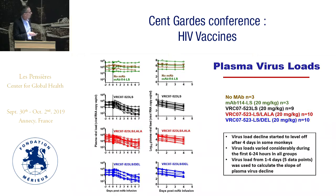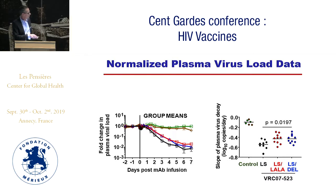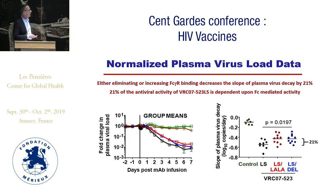Here are the data points used to calculate the slopes. The big reveal: if we look at the group means, the LS antibody — the unmodified antibody — has the steepest slope, the greatest antiviral effect. If you make the LALA mutation or the DEL mutation, which increases ADCC activity, you actually have less slope. This is quite highly statistically significant, representing about a 21% difference. So in this model system, eliminating or increasing Fc gamma receptor binding decreases the slope of plasma virus decay by 21%. You can use that to say 21% of the antiviral activity of VRC07-523-LS is dependent upon Fc-mediated activity.